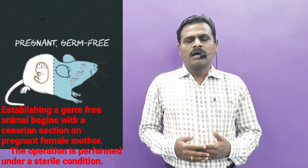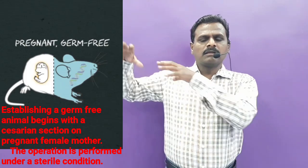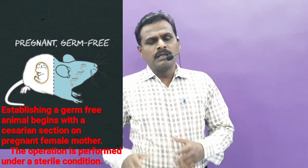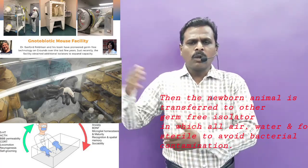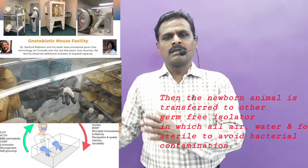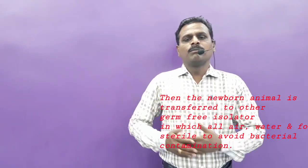Establishing a germ-free animal begins with a caesarean section on a pregnant female. The operation is conducted strictly under sterile conditions. The young animal is removed from the mother's womb through a careful sterile surgical process, without exposing it to any microorganisms present in the mother's body. The newborn animal is then transferred to a germ-free sterile isolator.